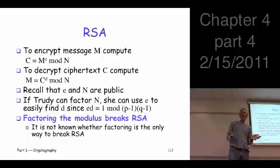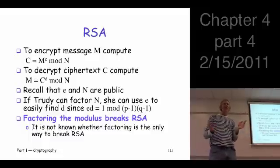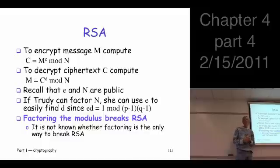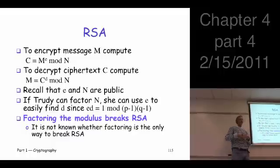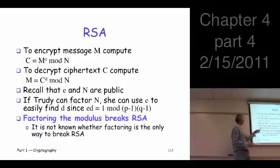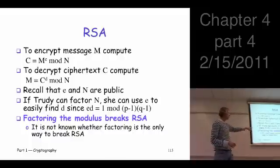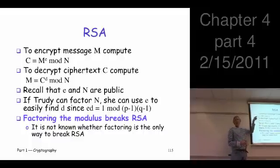To decrypt, the claim is you take the ciphertext c, raise it to the d power mod n, and you get back the original message m. Only the holder of the private key knows d, so only they can decrypt. It's not at all obvious that raising the ciphertext to the d power recovers the message — we'll need to do some work to show that.